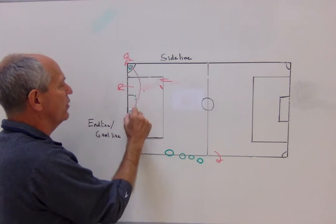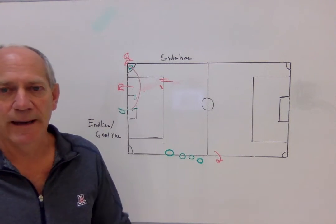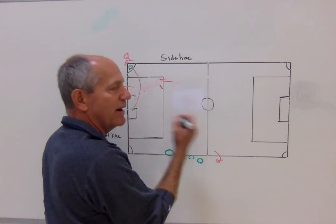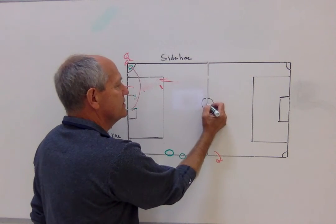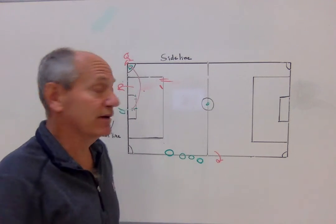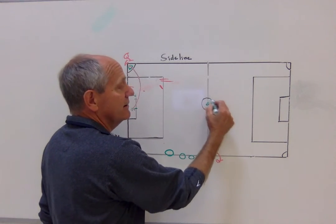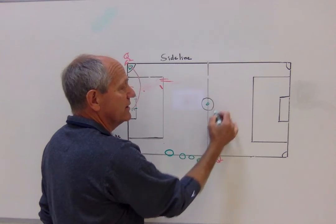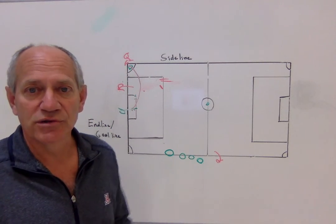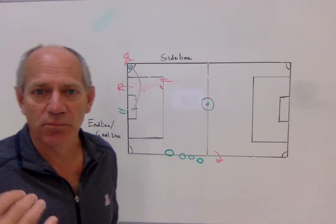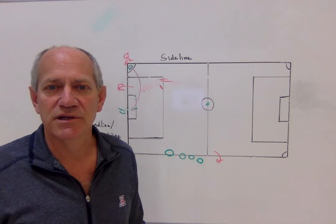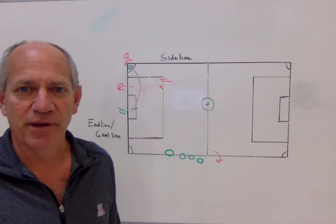Lastly, after a goal is scored, the team that was scored upon hits the ball in the center circle and it's another free kick. They can kick it and no one can touch it until the ball is kicked. So those are the ways when a ball goes out of bounds, or after you're scored upon, that you get a soccer ball back into play.